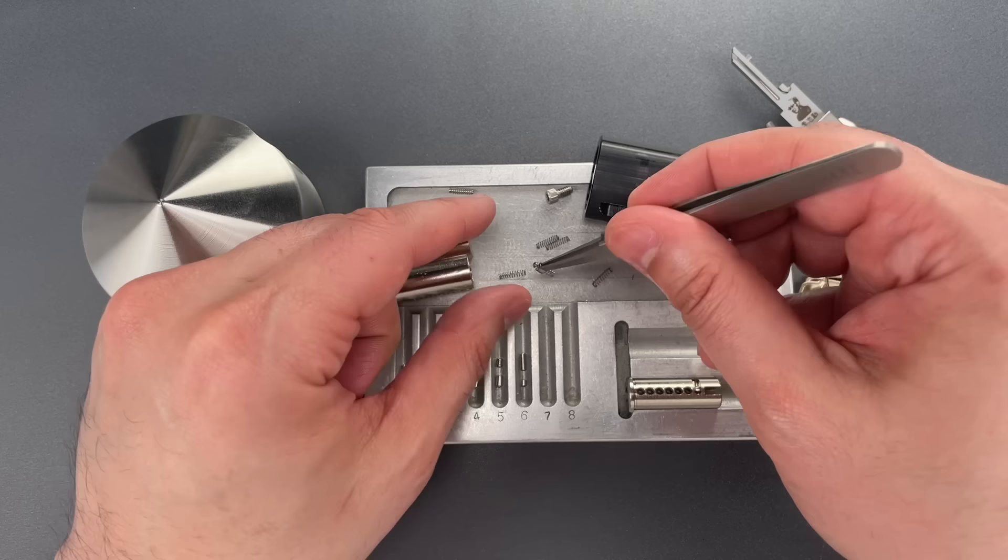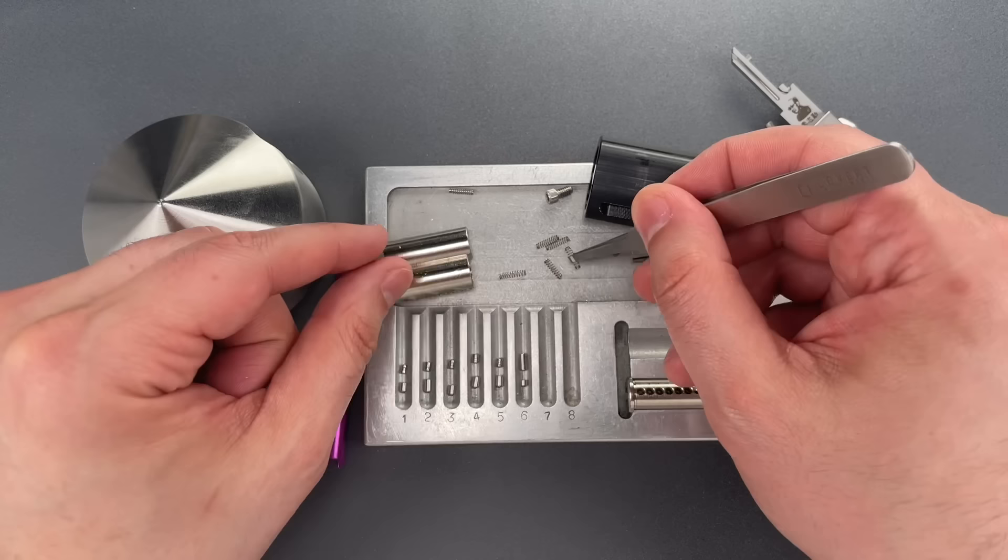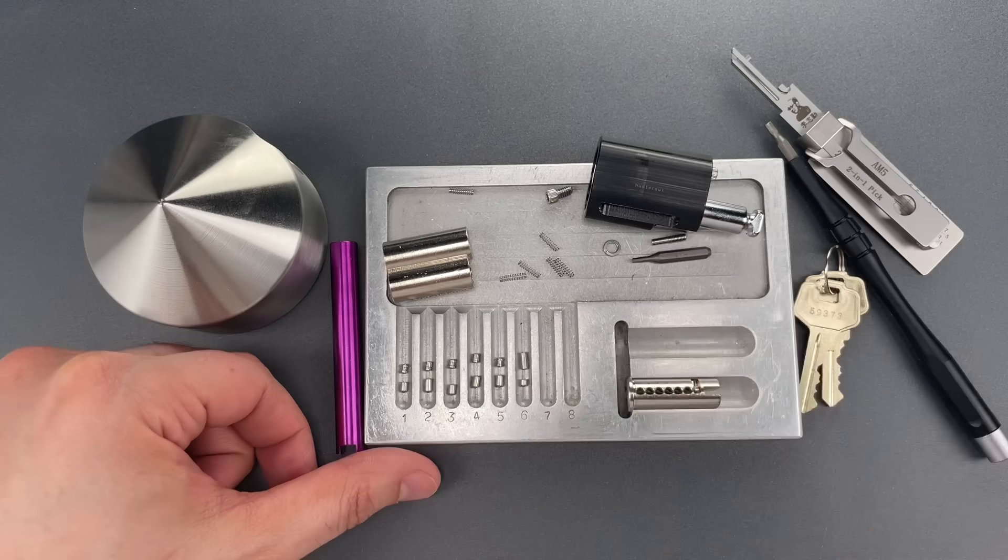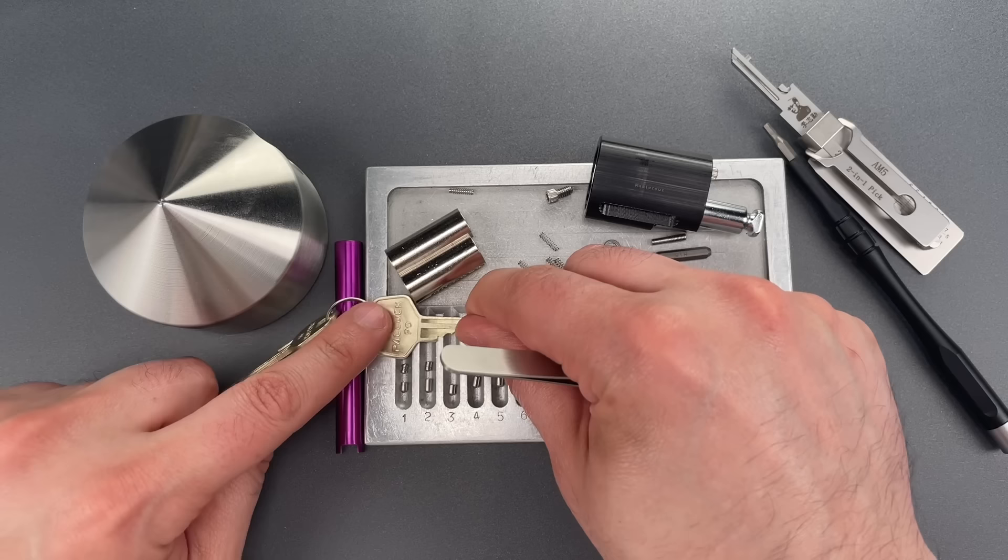Actually now that I'm looking at this I can see that they are not all the same strength. It looks like we have some stronger and some weaker springs that probably helps with pick resistance. Looking at these pins, I can see the extra long standard pin in slot six is likely to prevent comb picking, something that the Master and American Lock versions of the puck lock can be vulnerable to.